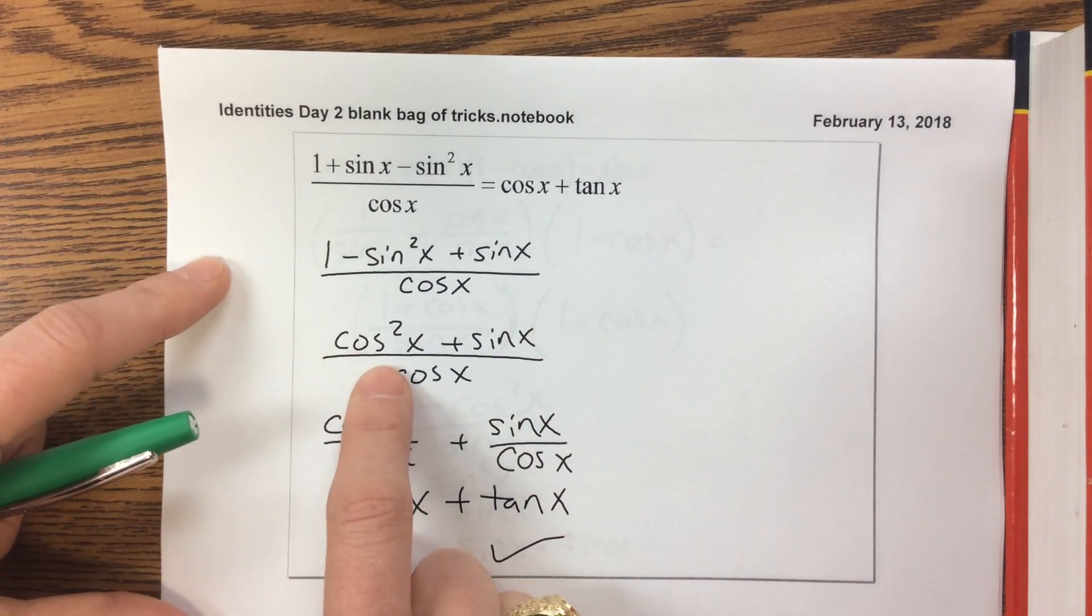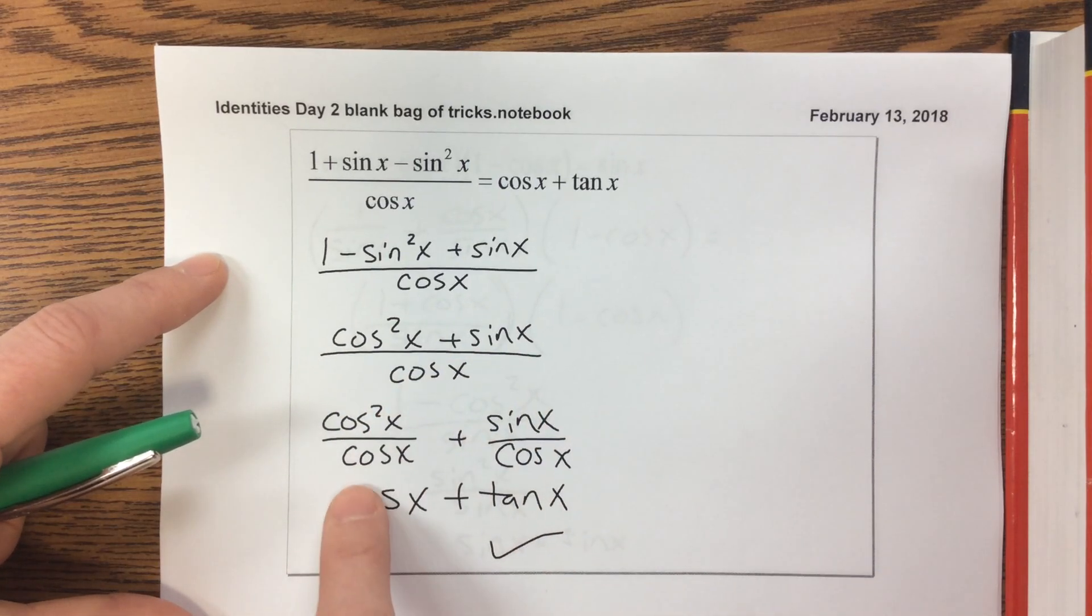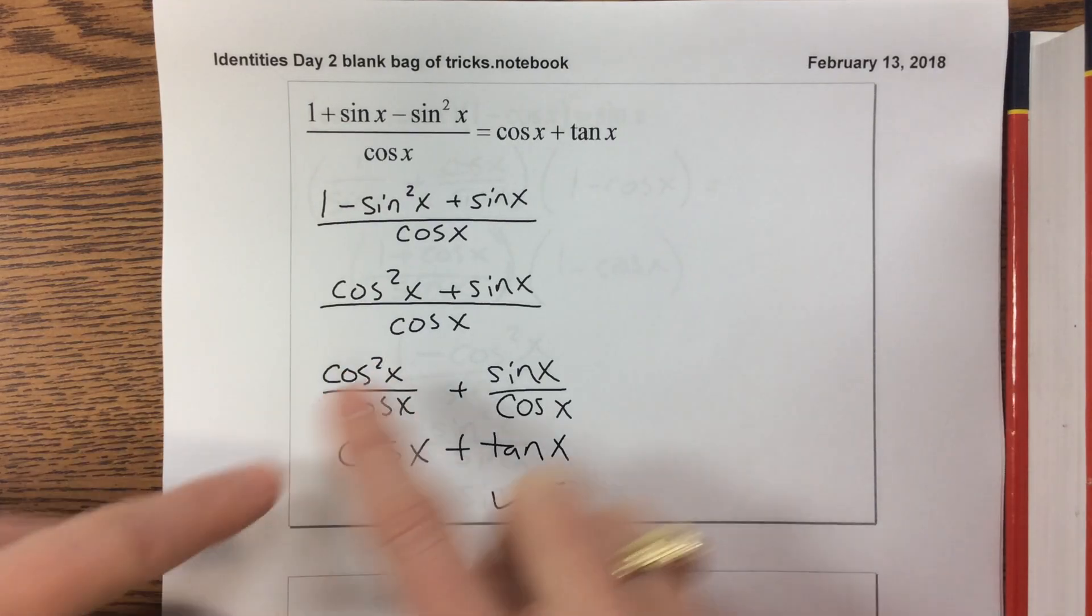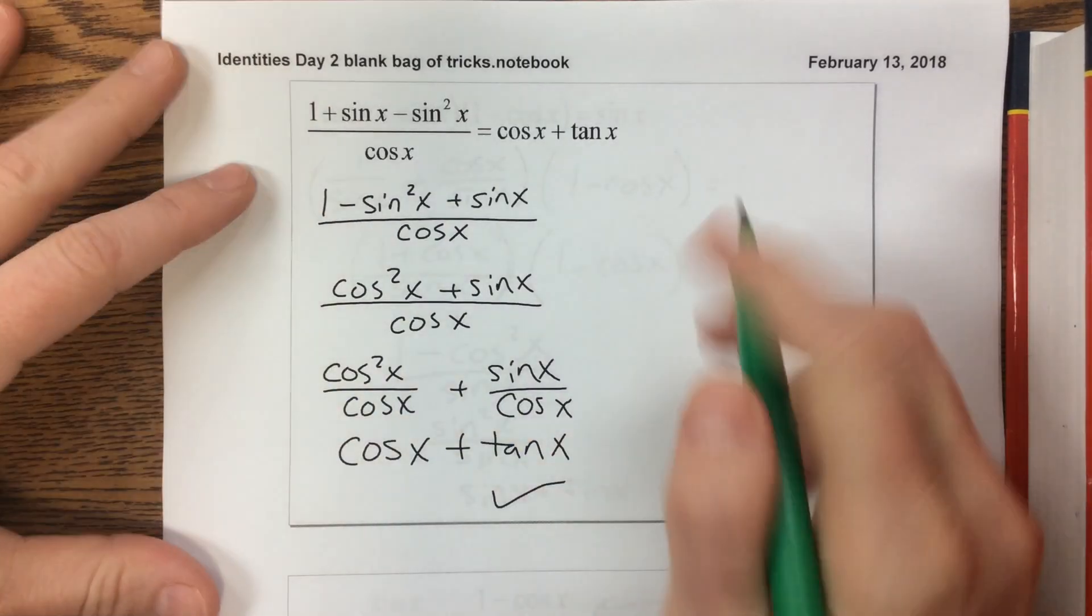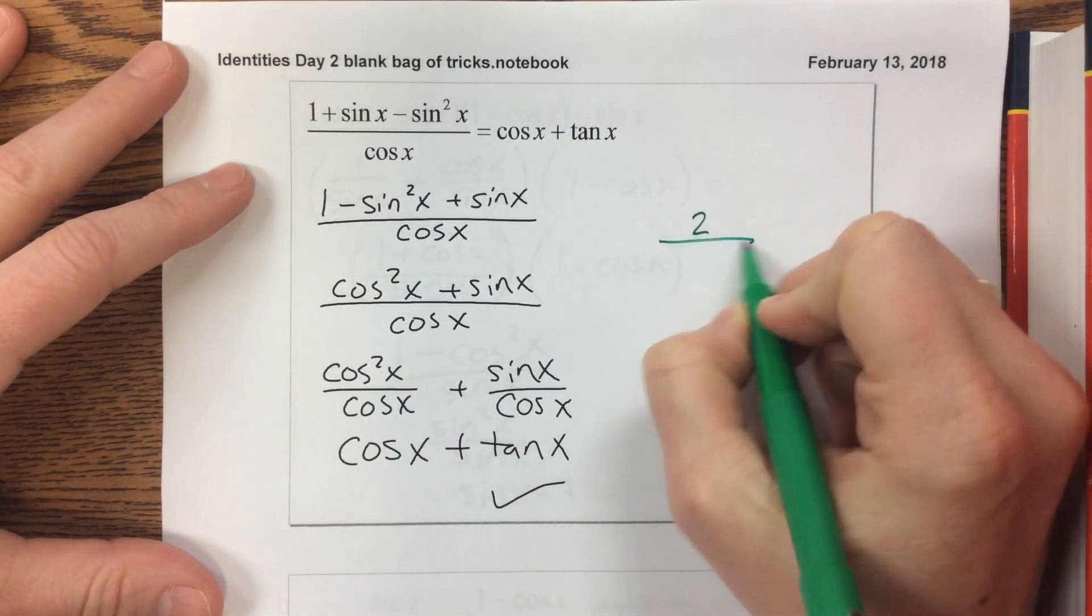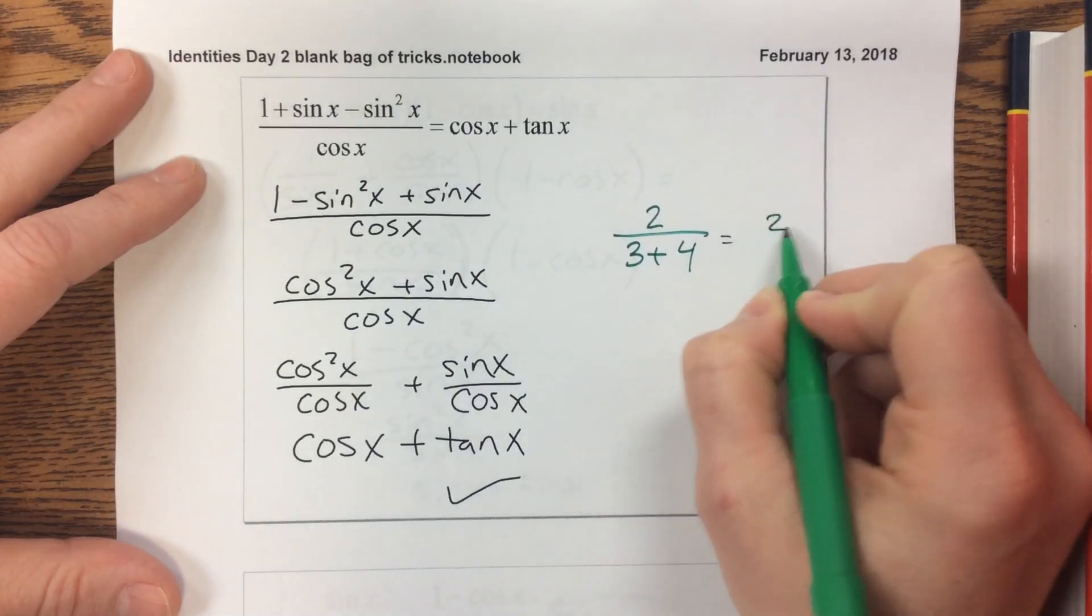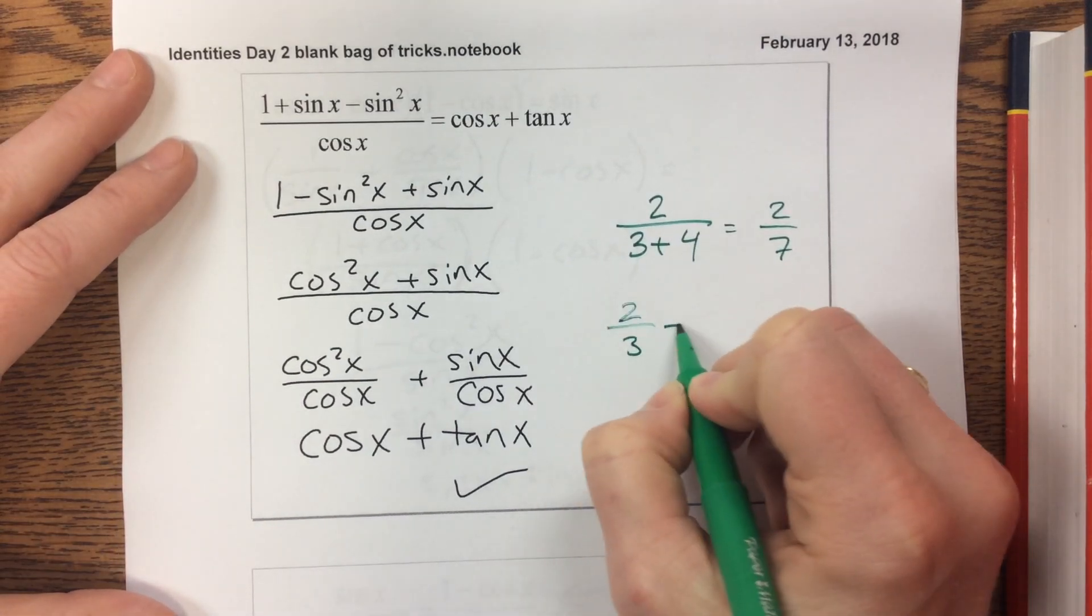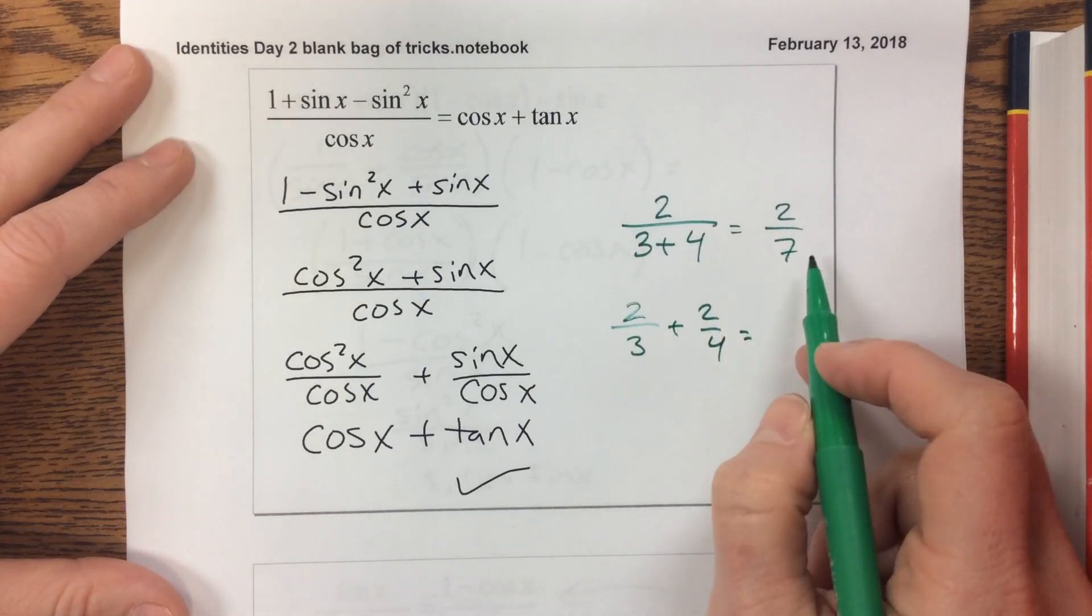Maybe I should put equal signs, but whatever. So that becomes cosine squared x plus sine x and then over cosine, giving me cosine squared divided by cosine, well then I can split the numerator. So keep in mind, splitting the numerator is fine, but if you try and split the denominator, something like this, this is equal to 2 sevenths, which is less than half.